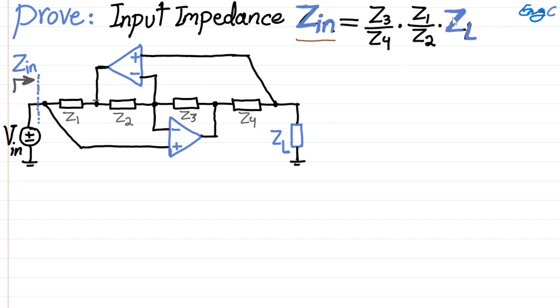you can convert or transform Zl to Zin, and you can effectively realize either capacitor-to-inductor converter, or you can realize negative impedance converter, NIC, by properly selecting Z1, Z2, Z3, Z4 values.